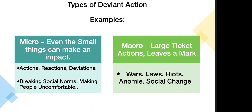Another term for micro deviance, pulling back to earlier lectures, is folkways — informal norms. These are very common with the actions we do daily. If we show up to a black tie party without a tie on, we may receive social isolation and shifts in how we're treated. Macro deviance leaves a mark — wars, laws, riots, anomalies, social change.